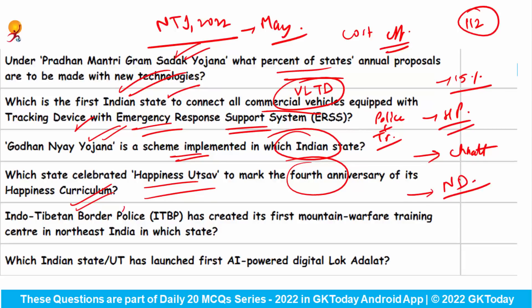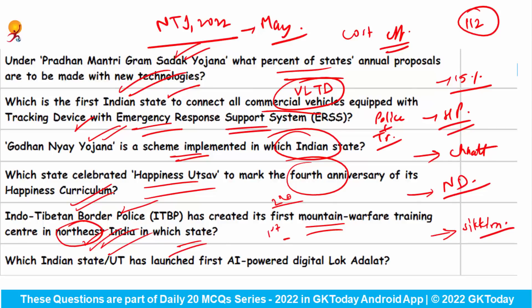Indo-Tibetan Border Police has created its first mountain warfare training center in Northeast India in which state? They set it up in Sikkim. This is their second center in the Northeast; the first was set up in Uttarakhand.